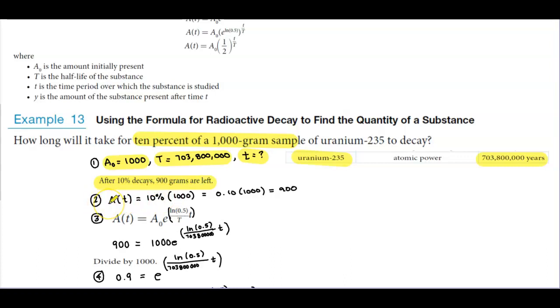Well, in step number two, that's going to be A(t), because that's how much is left. That's 10% of 1000. Well, 10% of 1000 is the same thing as 0.10 times 1000, which gives you 900.